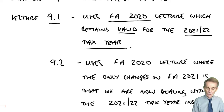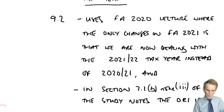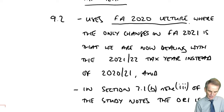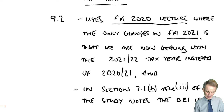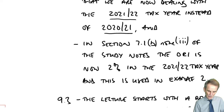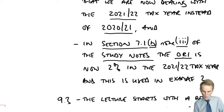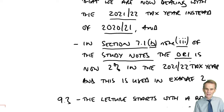Lecture 9.2 uses the FA 2020 lecture, where the only change in Finance Act 2021 is — as referenced in section 7.1, part b, note 3 of the study notes — the official rate of interest (ORI). That is now 2% for our 2021-22 tax year. The official rate of interest — a figure provided to you on your rates and allowances page — comes into that second lecture as part of working out the assessable benefit for an employee who is allowed the use of employer-owned living accommodation.